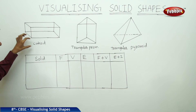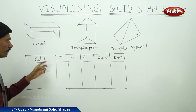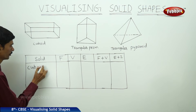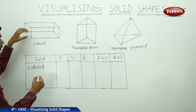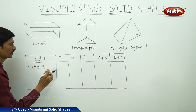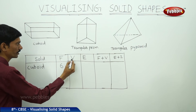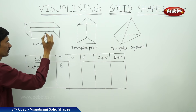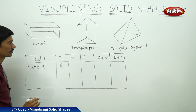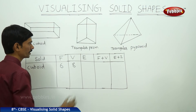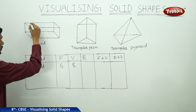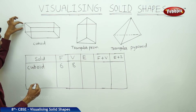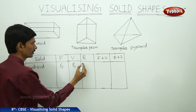Let us consider a cuboid, triangular prism, and triangular pyramid, and count their faces, vertices, and edges. In a cuboid, there are four lateral faces plus top and base, giving six faces total. There are eight vertices: four on top and four on the base. For edges: four on top, four on the base, and four on the sides, giving twelve edges total.